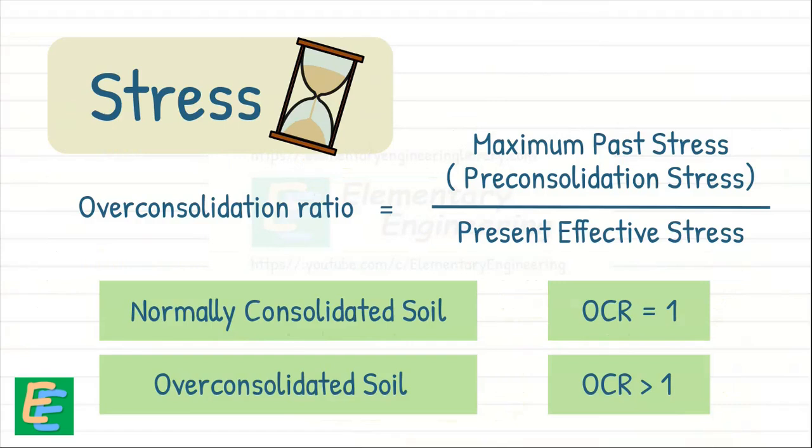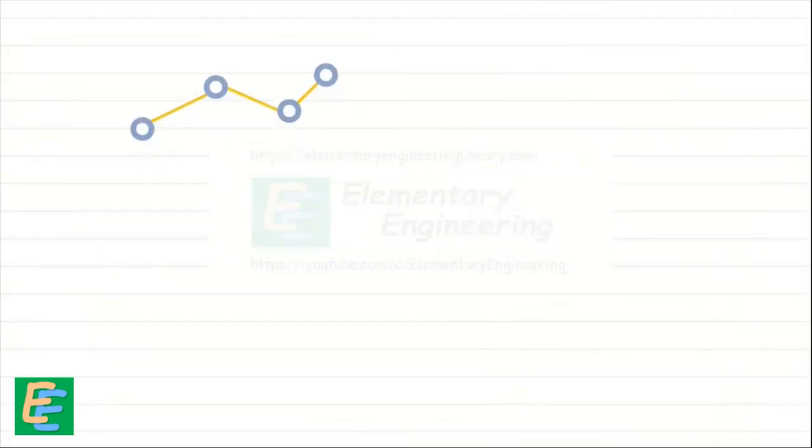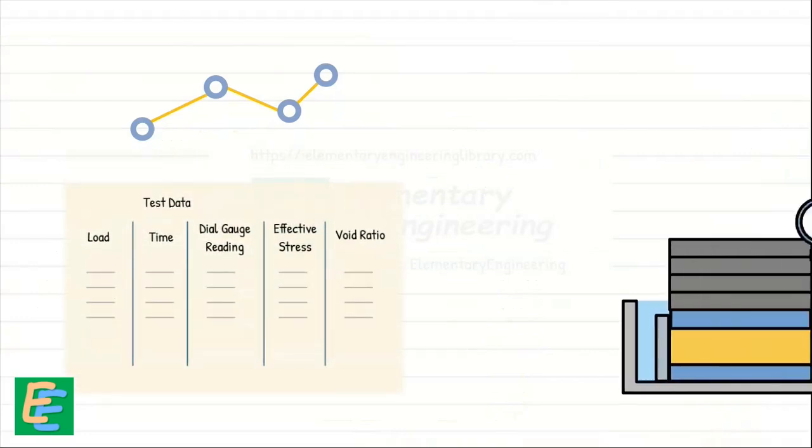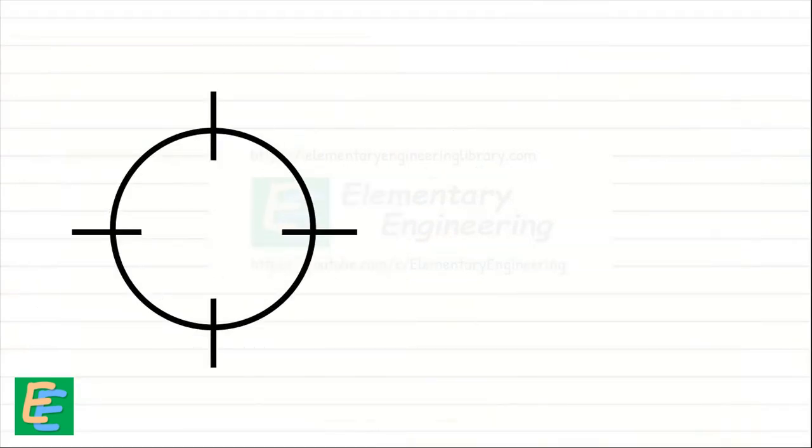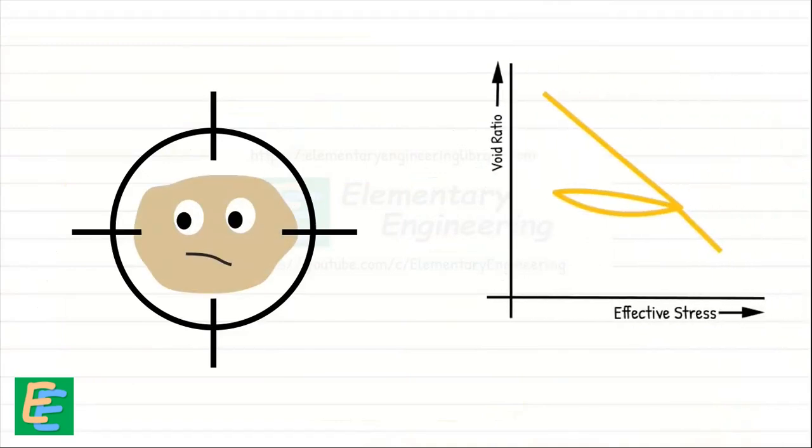We have discussed these in our previous video. In this video we will continue our analysis of the data obtained from the consolidometer test, part of which we have already discussed in our previous video. We will focus on understanding the behavior of soil by examining the void ratio and effective stress curve, which depicts the stress history of our soil sample.